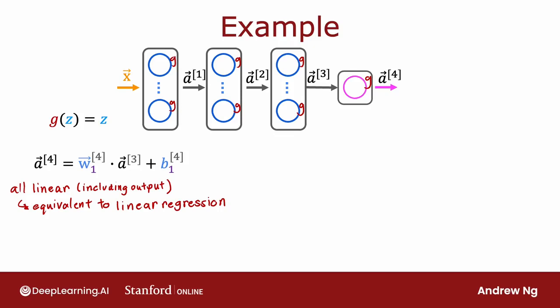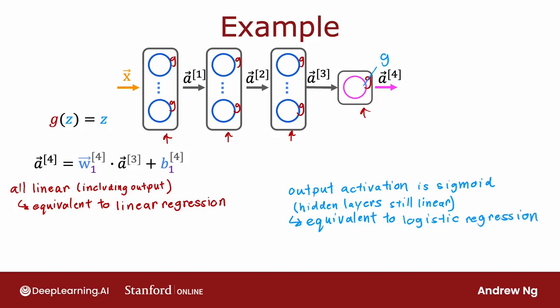Or alternatively, if we were to still use a linear activation function for all the hidden layers, for these three hidden layers here, but we were to use a logistic activation function for the output layer, then it turns out you can show that this model becomes equivalent to logistic regression. And a4, in this case, can be expressed as 1 over 1 plus e to the negative wx plus b for some values of w and b. And so this big neural network doesn't do anything that you can't also do with logistic regression.